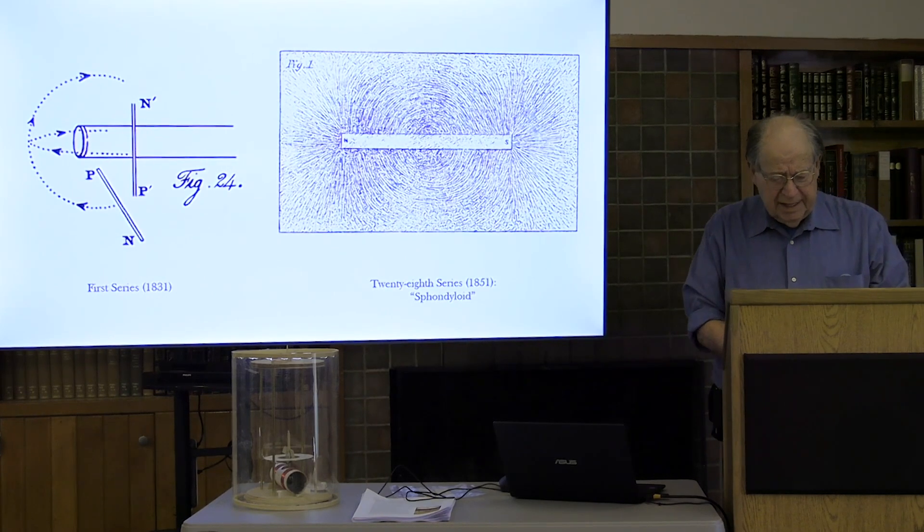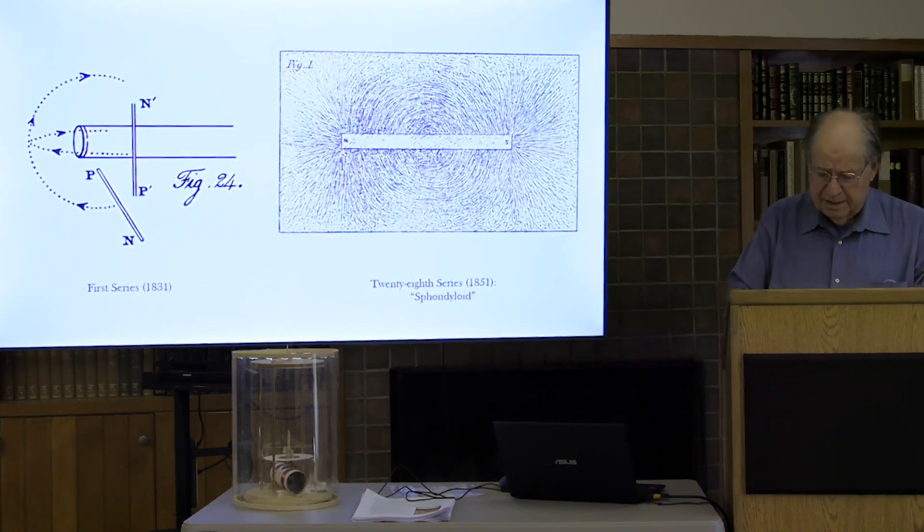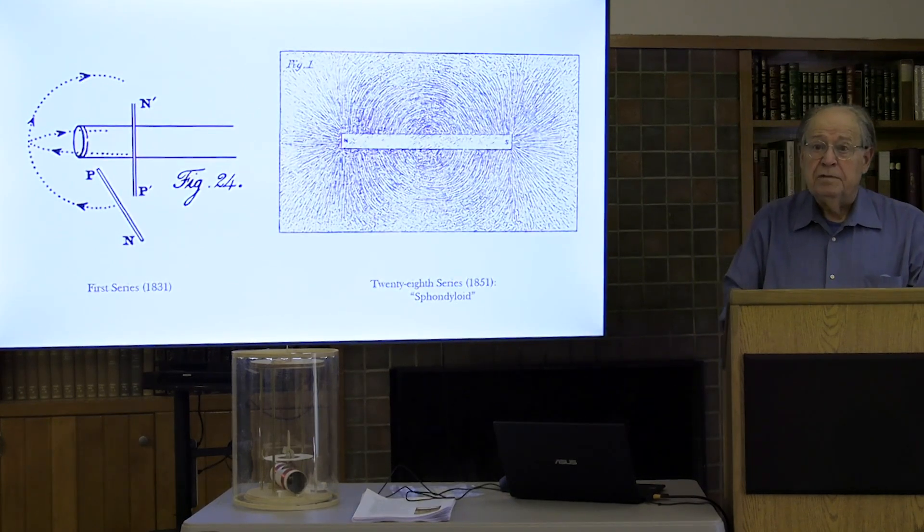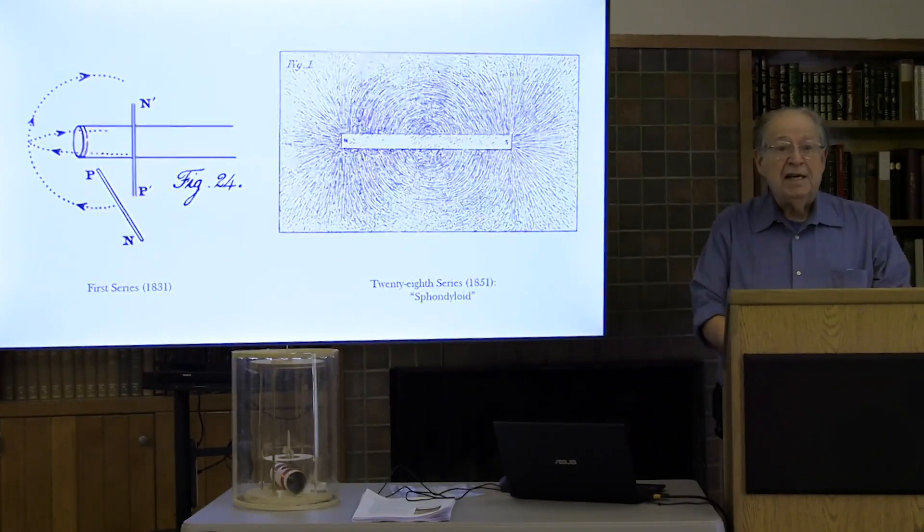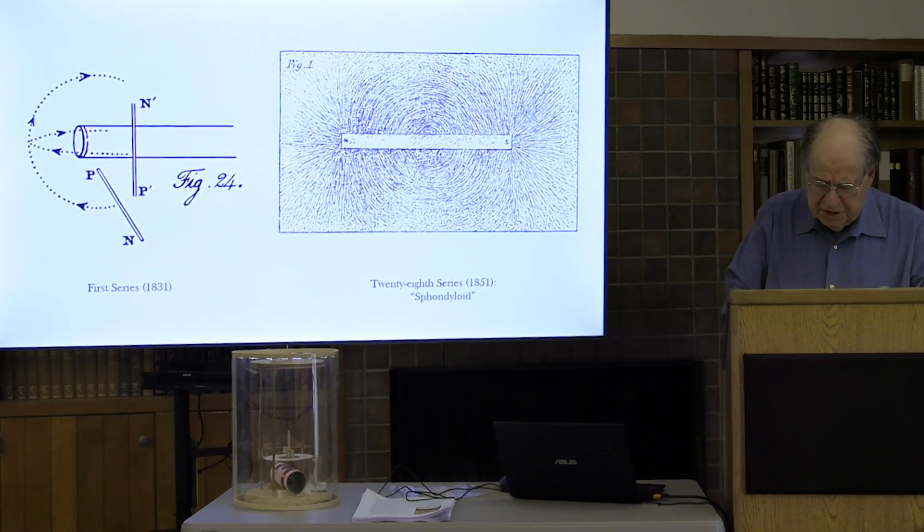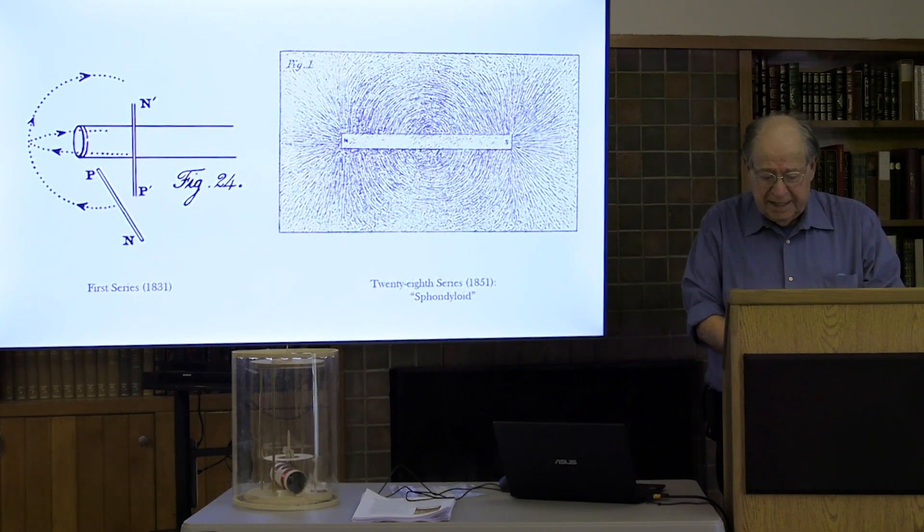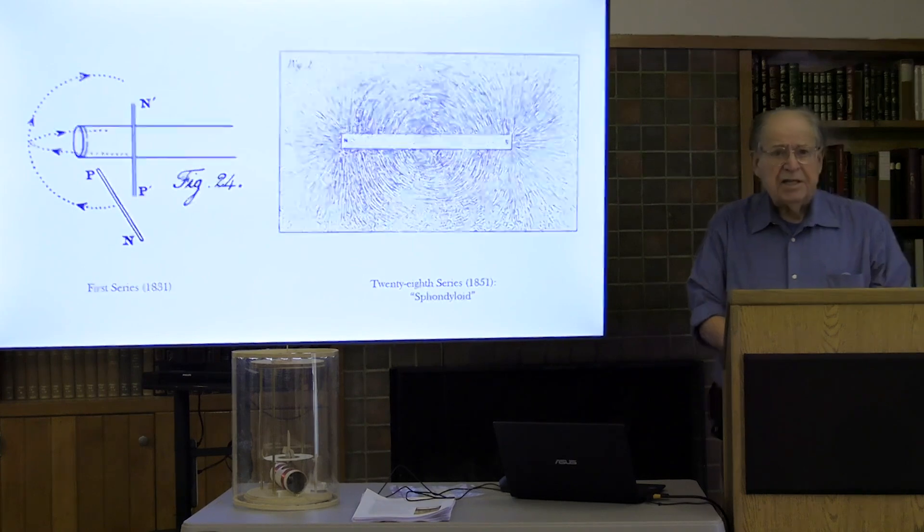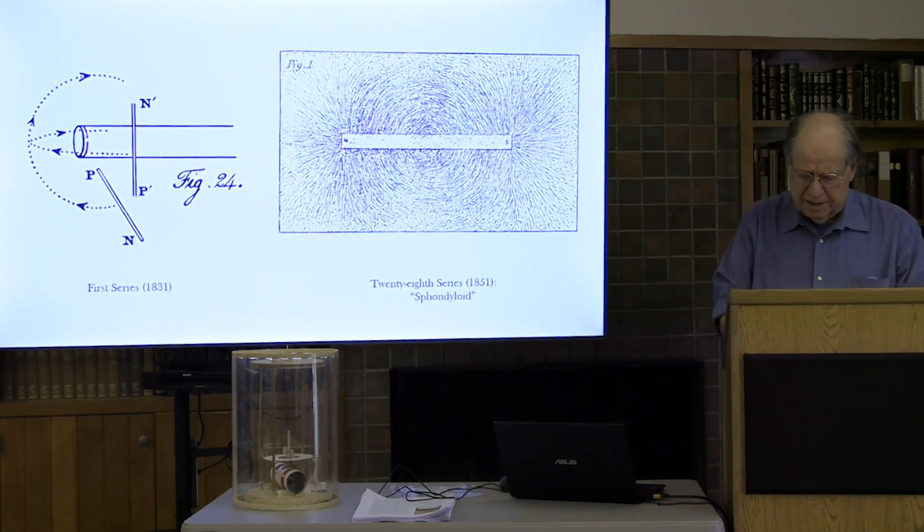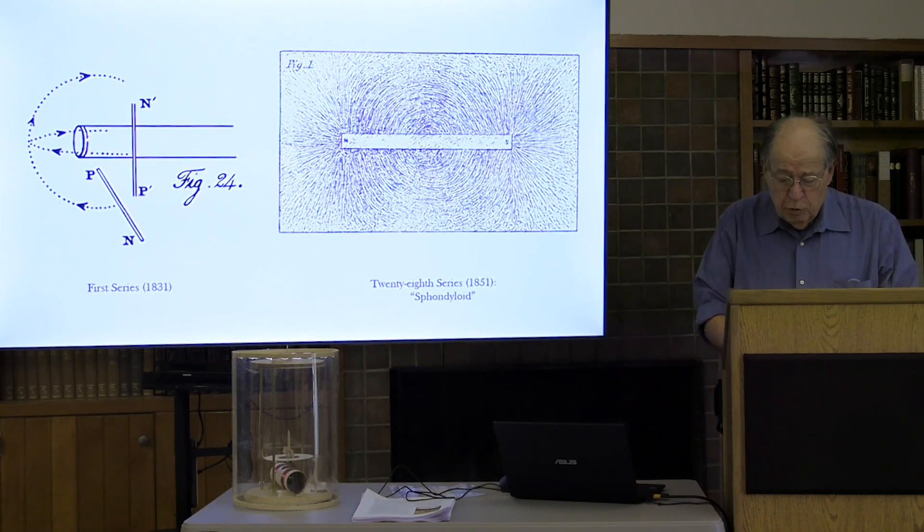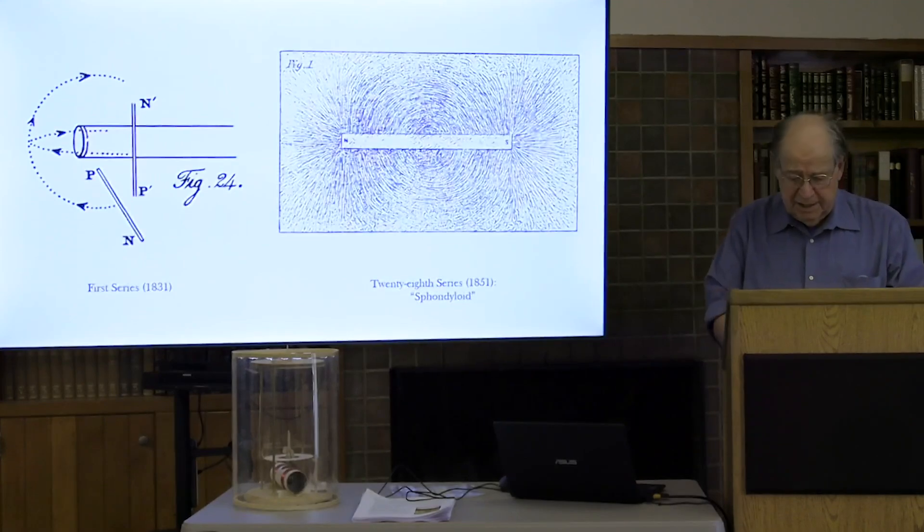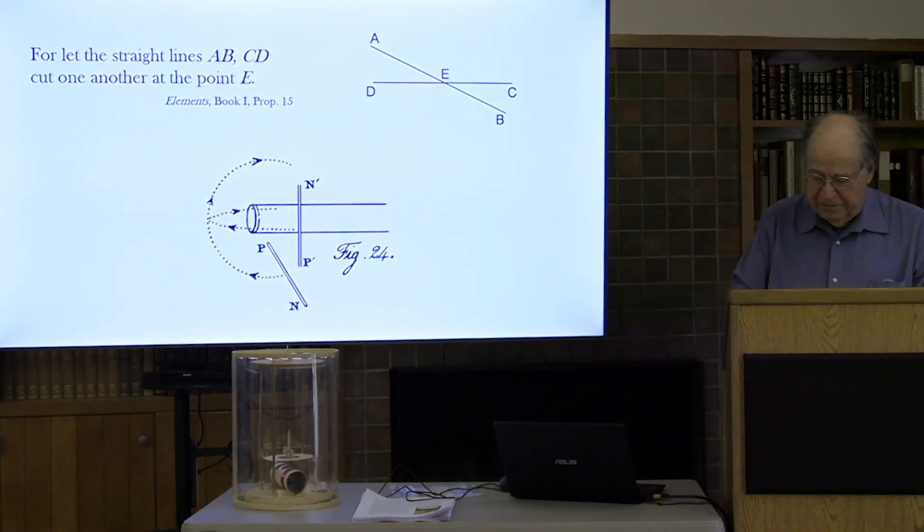What, then, can Faraday mean by his verb, cut, when he speaks of the wire cutting magnetic curves as it moves? It is certainly not the sort of cutting that is involved in, say, cutting a rope. There is no suggestion of anything being cleaved, sundered, or split apart. Faraday's cutting has there only a geometrical sense, the sense we know from Euclid. When one Euclidean line cuts another, it passes across it, as in Book 1, Proposition 15. For let the straight lines A, B, C, D cut one another at the point E.